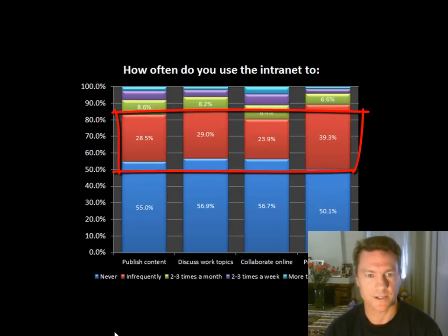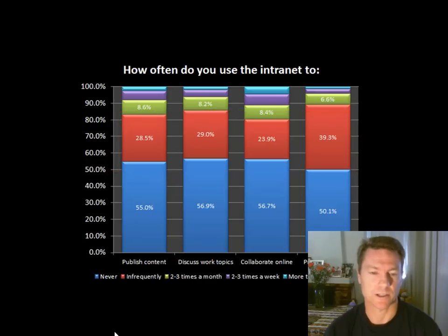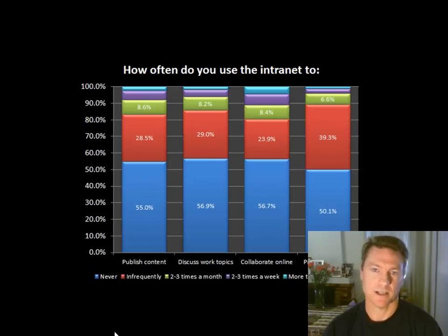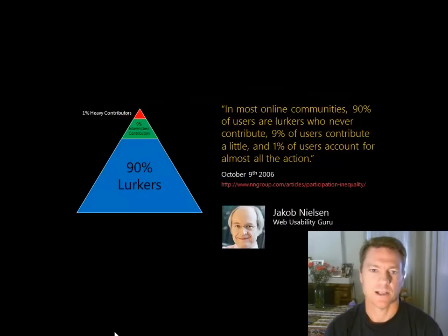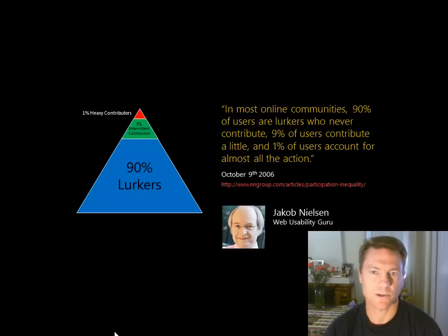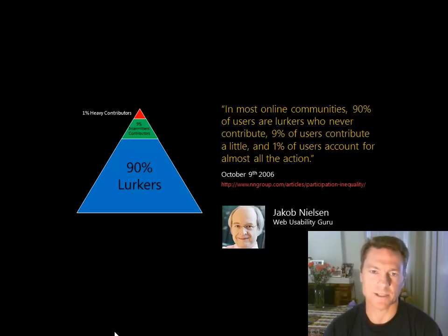To me, this is a huge problem and a huge opportunity for organisations that can increase the percentage of people contributing content. This is supported by Jacob Nielsen, a web usability guru, who concluded that in most online communities, 90% of users are lurkers who never contribute, 9% contribute a little, and 1% account for almost all of the action. In my findings it's closer to 55–60% lurkers, but it's a similar finding — only a very small percentage of people are contributing content.